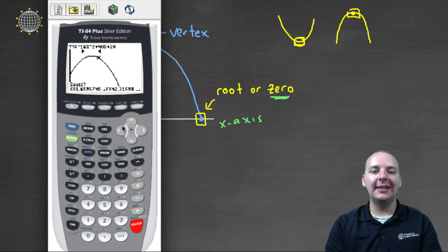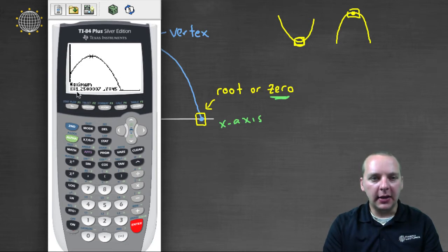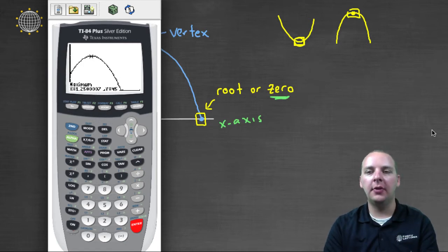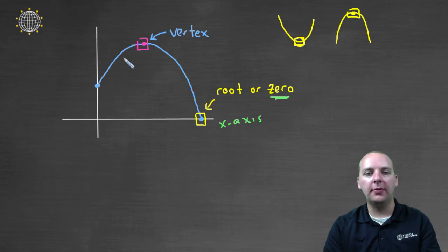And then it'll ask you for a guess. So you get it somewhere in the ballpark of where the vertex is. It doesn't have to be exact. Get it close, and then push enter. And then it'll tell you exactly where the maximum is. It looks like x equals one point two five, and the y is forty five for our example. One point two five comma forty five. One point two five for x, forty five for y.